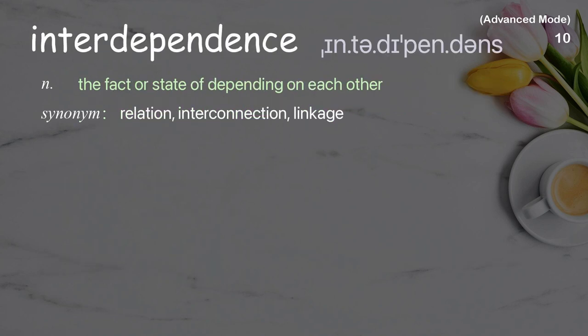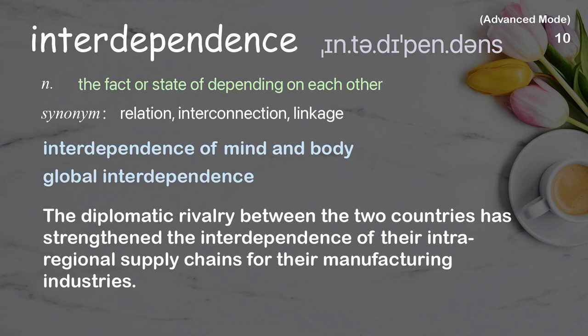Interdependence: the fact or state of depending on each other. Examples: interdependence of mind and body, global interdependence. The diplomatic rivalry between the two countries has strengthened the interdependence of their inter-regional supply chains for their manufacturing industries.